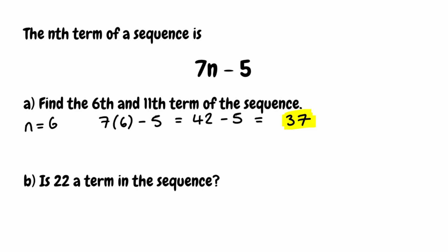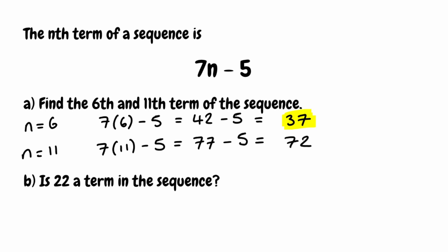We're then looking for the 11th term, so we substitute n equal to 11. We'd have 7 multiplied by 11, then take away 5. 7 multiplied by 11 gives us 77, and taking away 5 leaves us with 72. So the 11th term of this sequence is 72.